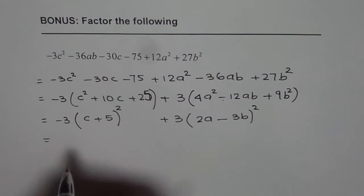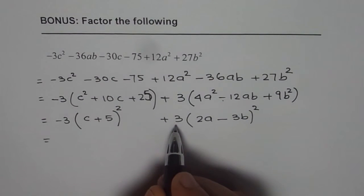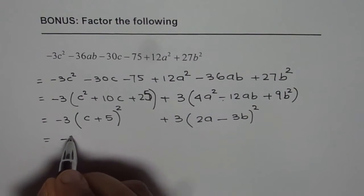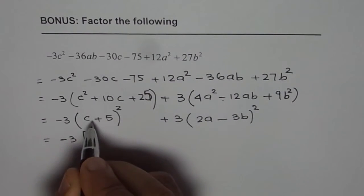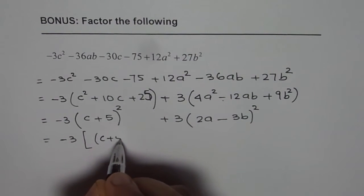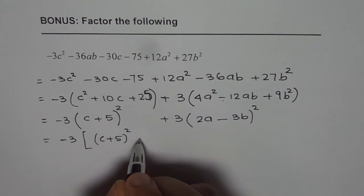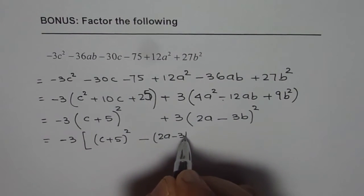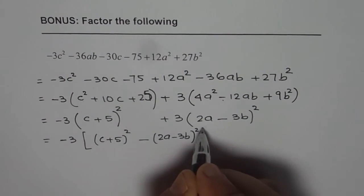Now we can take 3 common or we could take minus 3 common as you wish. So if I take minus 3 common then I have c plus 5 whole square minus 2a minus 3b whole square.